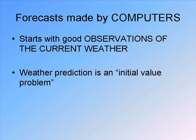Let's talk about how these computer simulations of the atmosphere — these models — work. First, they have to start with good observations of the current weather. If you don't know what the current weather is doing, no matter how good these computer programs are, they have no way of knowing what the weather is going to be doing in the future. A mathematician would say that forecasting is an initial value problem: if you don't know what is going on at the present time, there's no way to understand what's going on in the future.